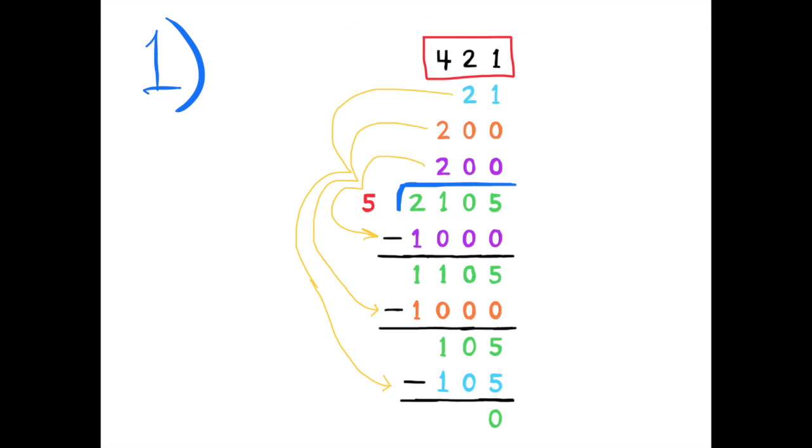Go back to the top of the page and you see the blue 21. 21 times 5 equals 105, and there at the bottom of the page you see 105 minus 105 equals 0. So if we go back to the top of the page and add 200 plus the second 200 plus 21, we get 421. So we know that 2,105 divided by 5 equals 421.